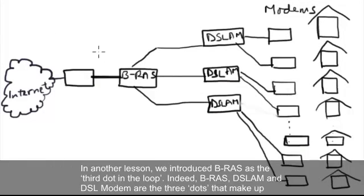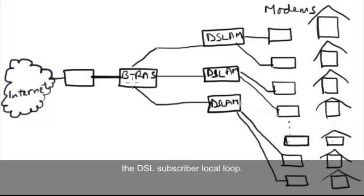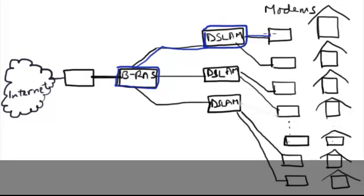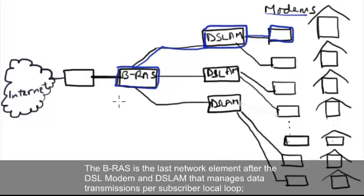In another lesson, we introduced Brass as the third dot in the loop. Indeed, Brass, DSLAM, and the DSL modem are the three dots that make up the DSL subscriber local loop. The Brass is the last network element after the DSL modem and DSLAM that manages data transmissions per subscriber local loop.